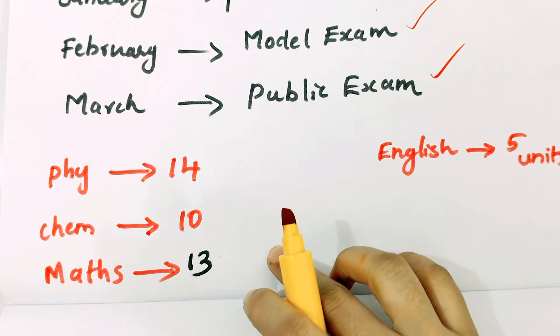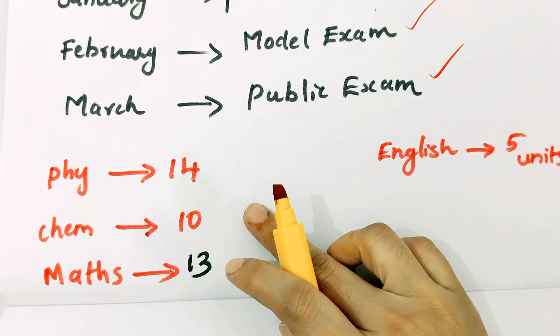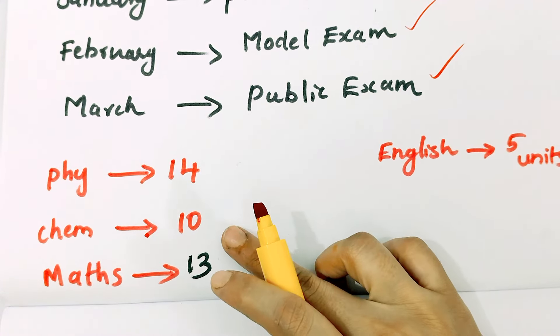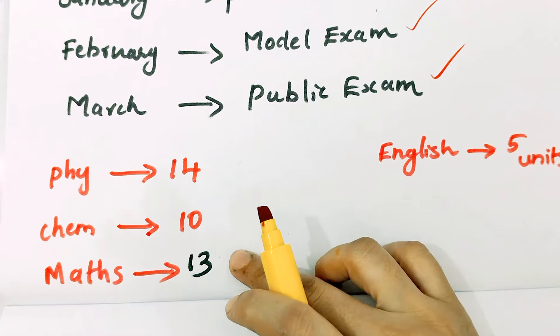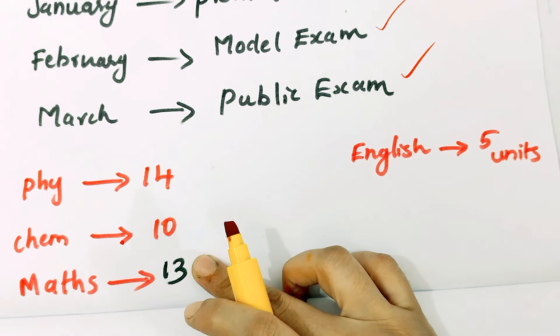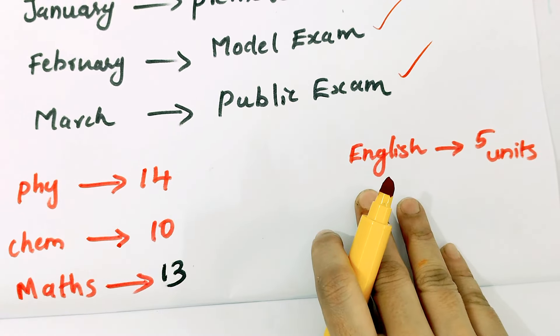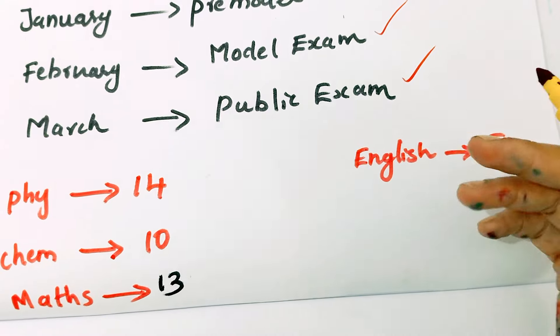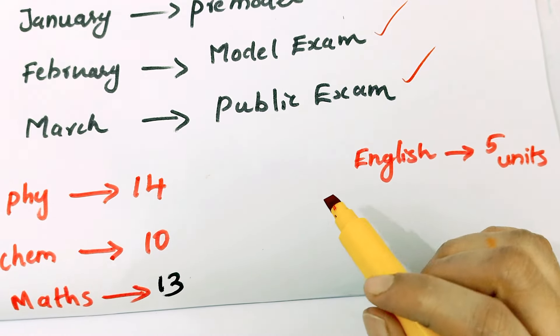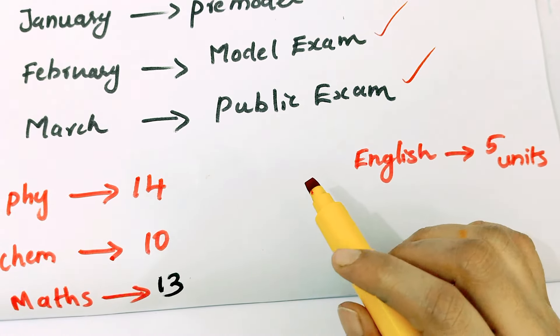In the course, we have 14 chapters. There are 10 chapters in physics. There are 13 chapters in maths. There are 5 chapters in English. Here is biology as well.